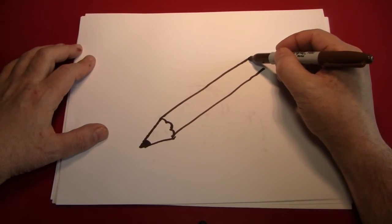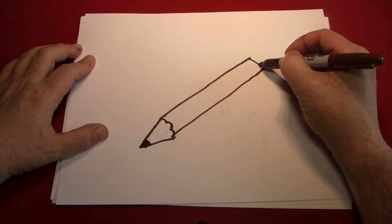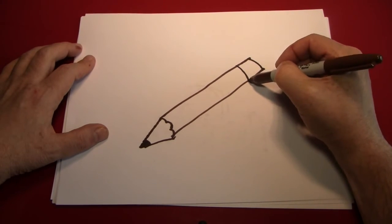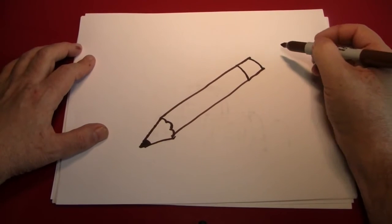Next, we're going to come up here and make a curve like that, and another one a little bit lower down. That's the metal part that the eraser's going to sit in.